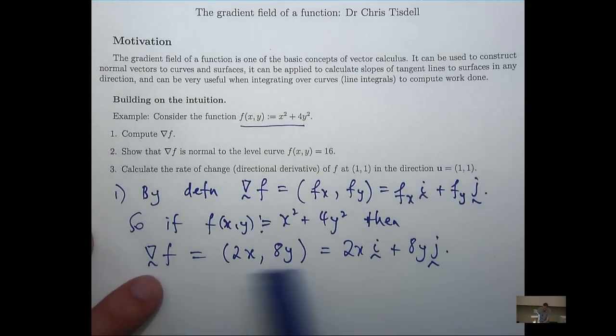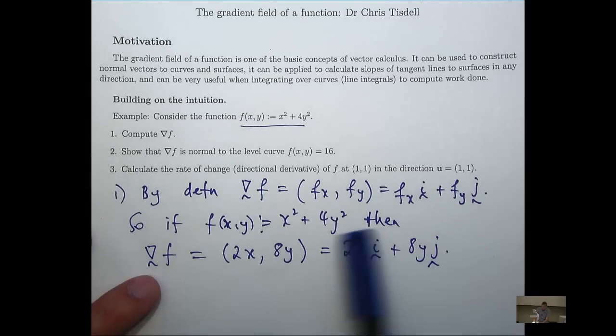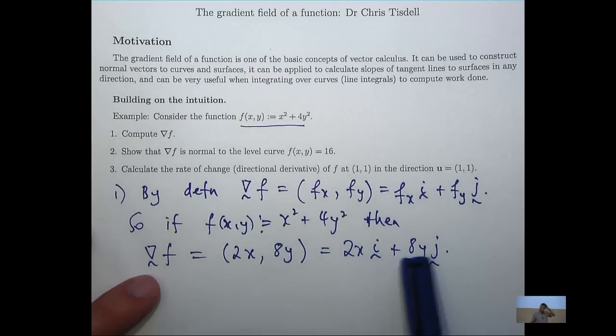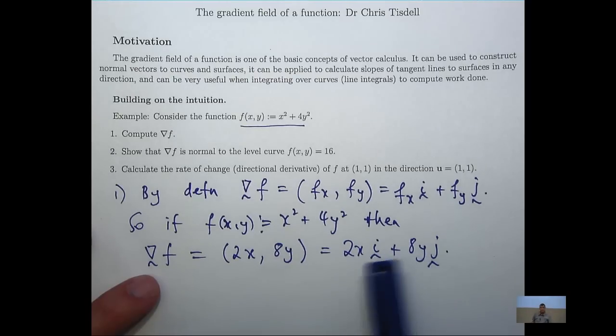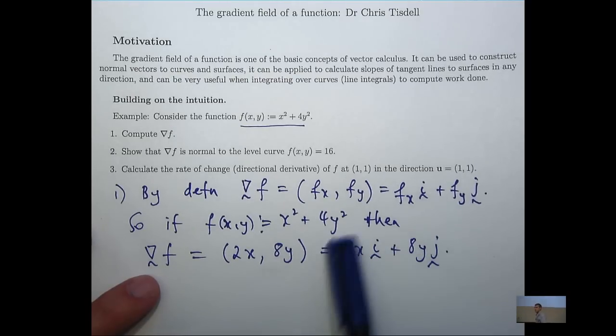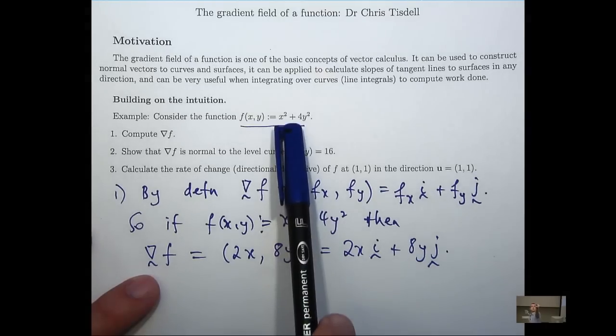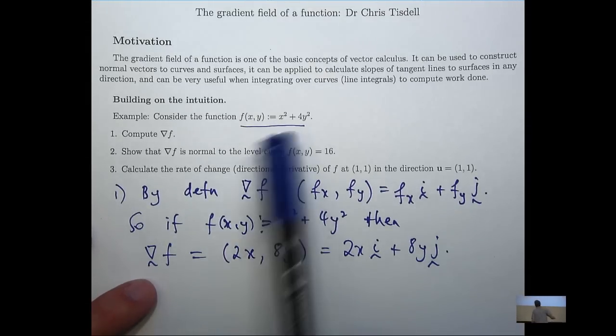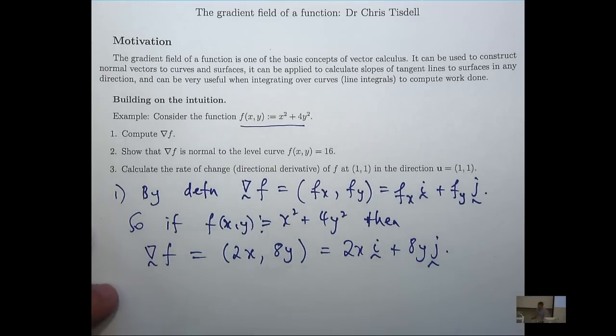What we've formed here is a so-called vector field or a vector valued function of two variables. If you plug in any values for x and y, you'll get a vector outputted. Notice that we started with a function, just a real valued function. But what the gradient does, it acts on that function and produces a vector.